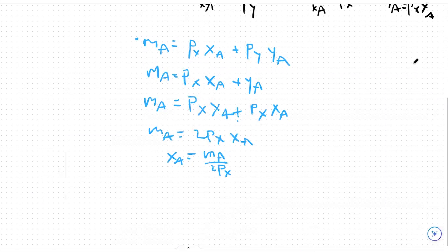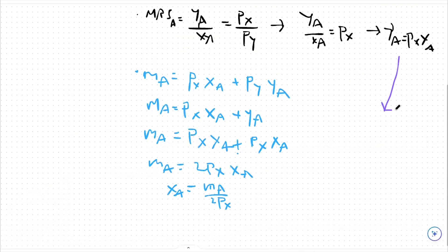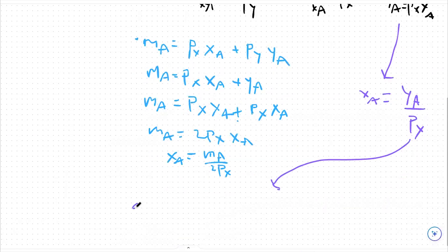And I'm going to say that now let's reframe this to be in terms of xA and we can say xA is equal to yA over px. Given that knowledge, I'm going to solve for the optimal amount of yA in my income.